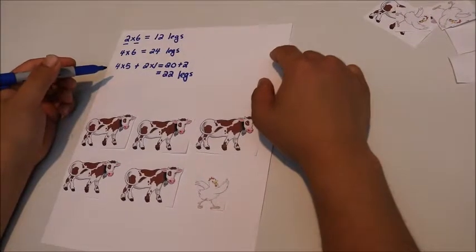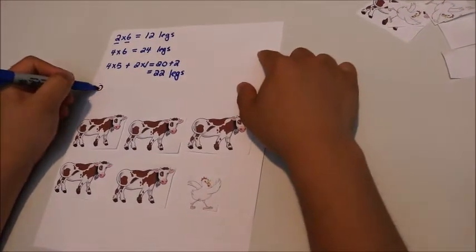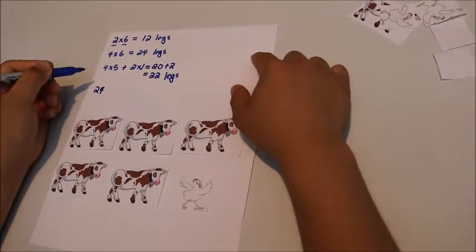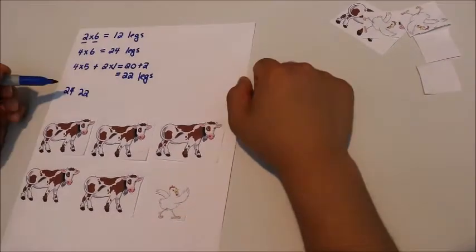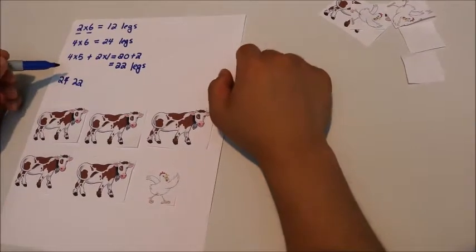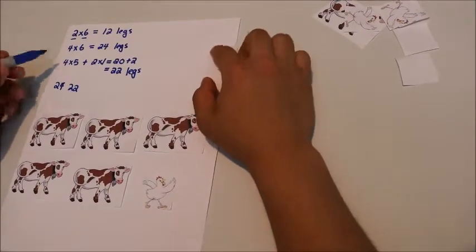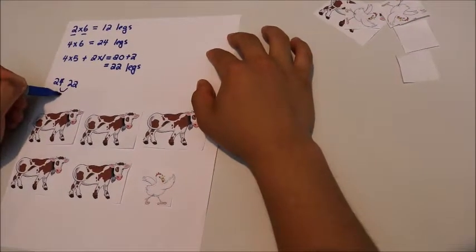When there were 6 cows, there were 24 legs. However, when we replace the cow with the chicken, it became 22 legs. We see a pattern now. For every chicken that replaces a cow, there is a difference of minus 2 legs.